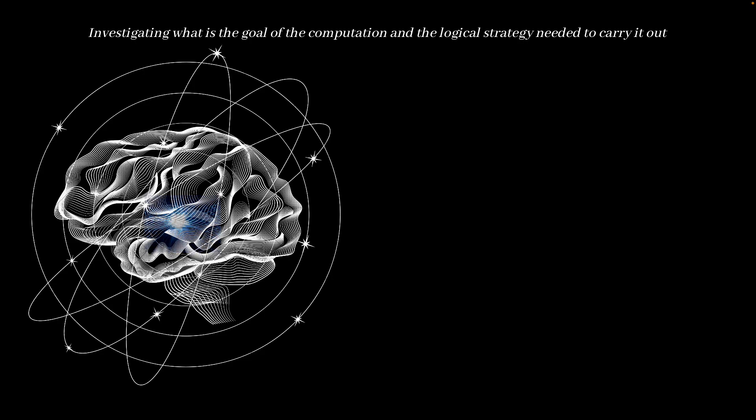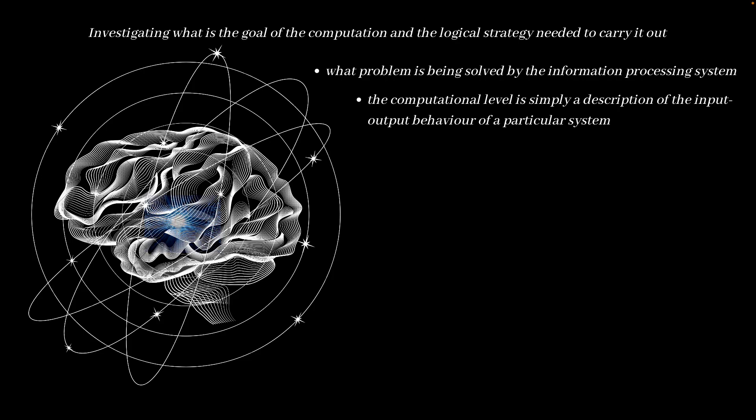At the computational level, we're essentially investigating what is the goal of the computation and the logical strategy needed to carry it out. The computational level of analysis describes both what the problem is being solved by the information processing system and why this problem is being solved in the first place. In other words, the computational level simply gives us a description of the input-output behavior of a particular system.